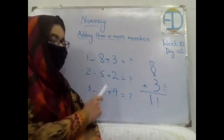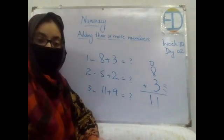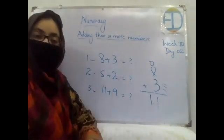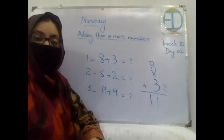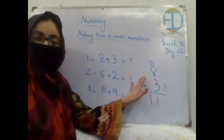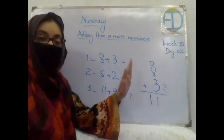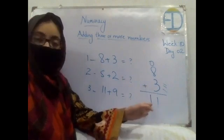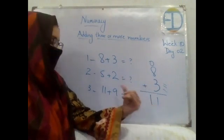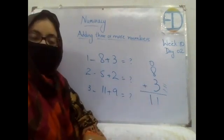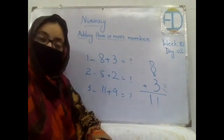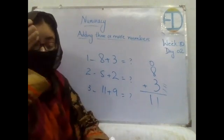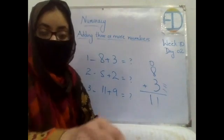Now who is going to tell me the answer of the second one? Hurry up, solve it on your notebooks. 5 plus 2 equals 7 — we follow the same procedure: first write in vertical order, then write their place values, then add. And the last one — 11 plus 9 equals 20. Excellent! I'm happy you've revised the lecture at home.